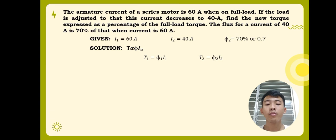Then, we can now have the formula T1 over T2 is equal to flux 1 times armature current 1, all over flux 2 times the armature current 2. After obtaining this formula, we can now substitute the given values, which will yield T1 over T2 is equal to 60 over 40 times 0.7. Calculating this, we can have the value T1 over T2 is equal to 2.1428.